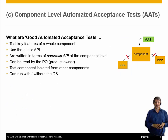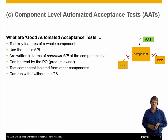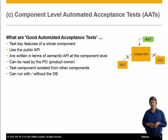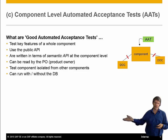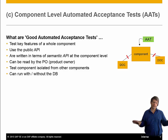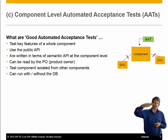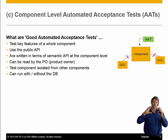What are component-level automated acceptance tests, or AATs? The idea is you have a large component — like billing — and you want to test this whole thing in isolation. It depends on other things called dependent-on components: maybe you need to send a mail or query a product database. You want to test with as little dependency on the outside world as possible. Good automated acceptance tests test key features of the whole component through its top-level public API — not a unit test of a small piece, but something that addresses all the features the component offers.